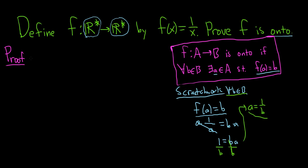So for our actual proof, we'll start by saying, take any b in r star. So this is our capital B. Okay, that's this part here.